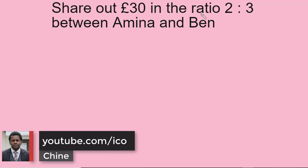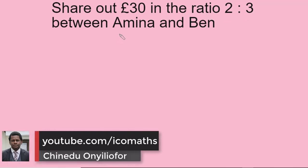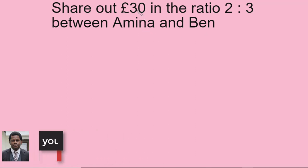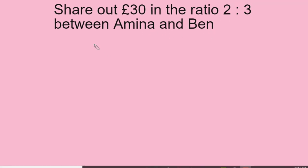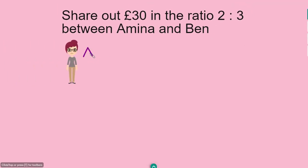We need to share 30 pounds in a ratio 2 to 3 between Amina and Ben. How much will Amina get and how much will Ben get? We know they share these 30 pounds in a ratio 2 to 3, so first I'll list the names of the sharers — Amina and Ben — and write the ratio 2 to 3 next to each.